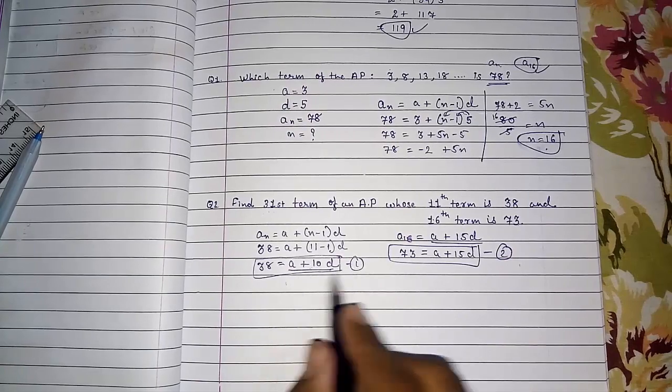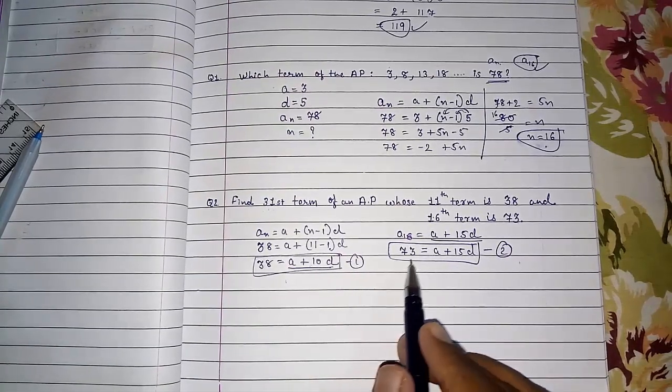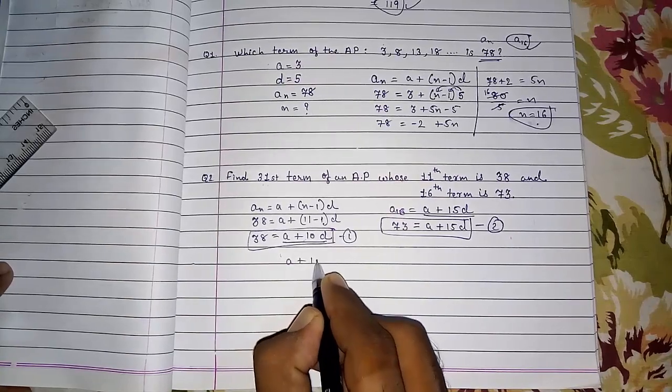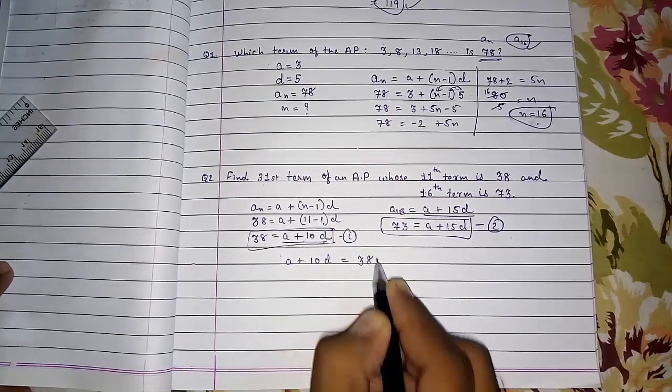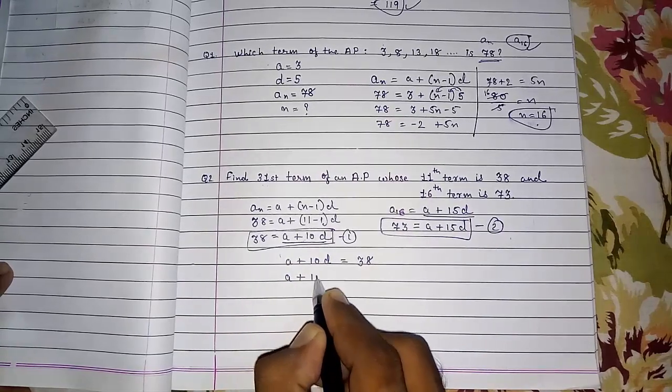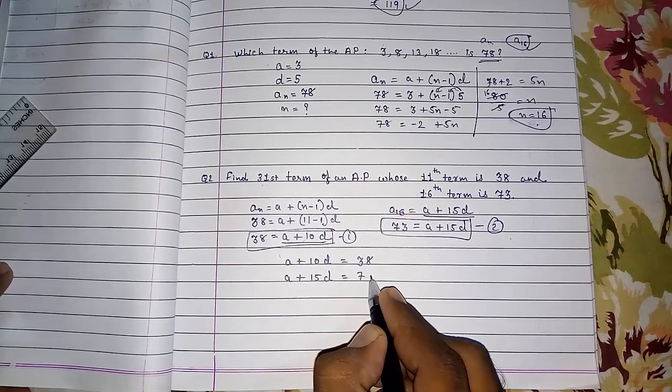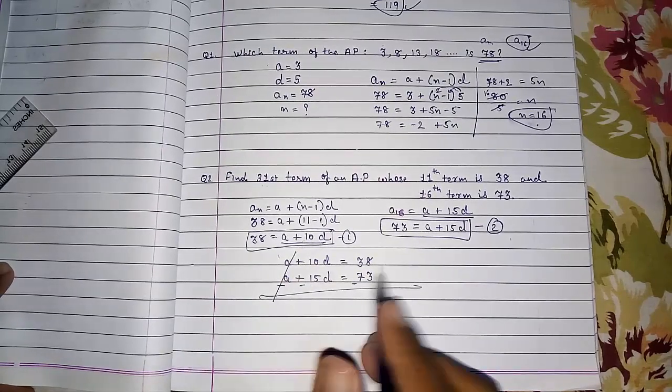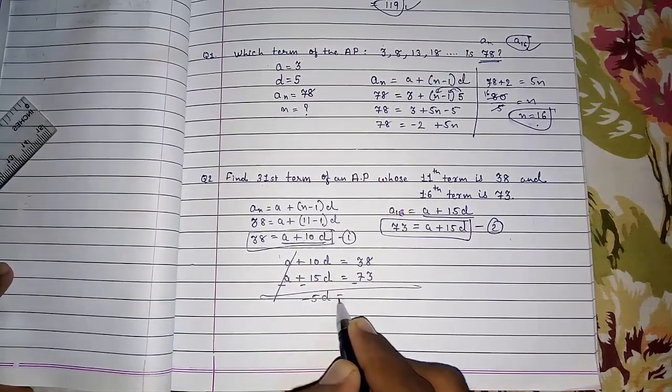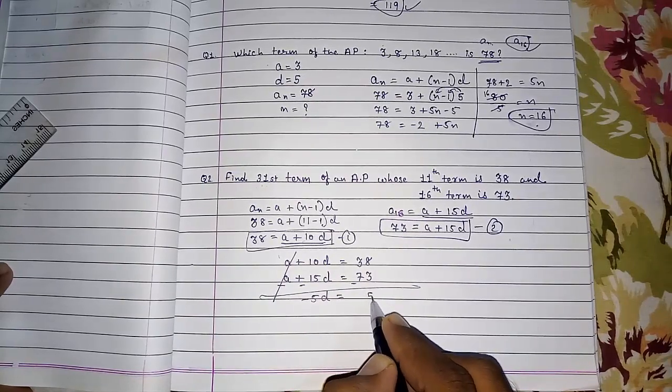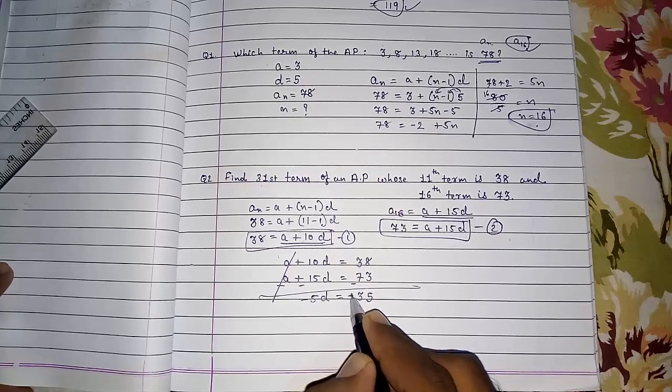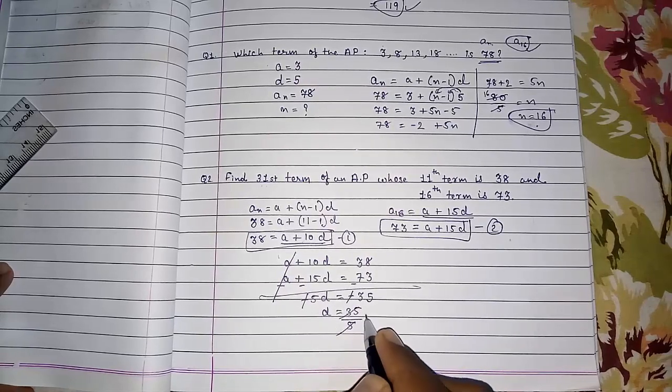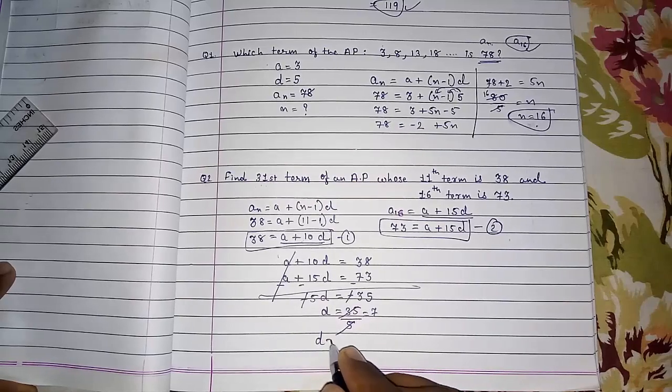Now you are getting 2 equations. You can solve by elimination, substitution or cross multiply. Whichever method you like. Here I am writing. A plus 10 D equals 38. I am going to solve this by elimination method. A plus 15 D equals 73. Now we have to subtract this. A minus A gone. This will be minus 5 D. And subtraction 13 minus 8 is 5, and 6 minus 3 is minus 35. Now negative on both, so D will be 35 by 5. It will be 7. So we got D equals to 7.